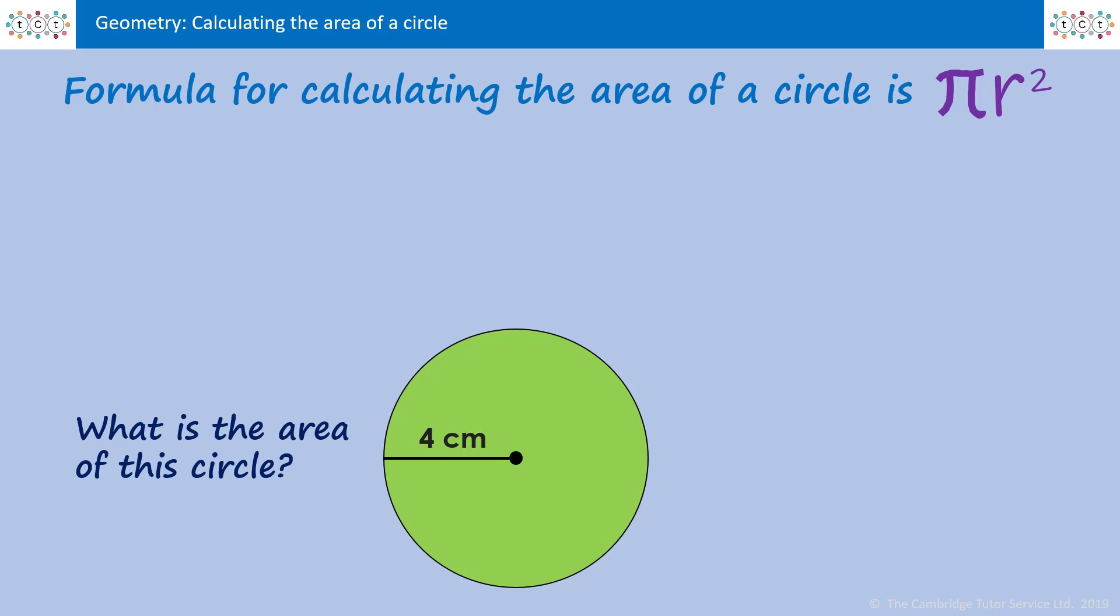Using the formula πr² find the area of this circle. Pause the video and have a go. So pi remember is 3.14 and the radius is 4 centimeters. But before we multiply those together, remember that radius has to be squared first. The radius squared, that's 4 squared which is 16. Now we have pi times by 16, which is 50.24. The area of this circle is approximately 50.24 centimeters squared.